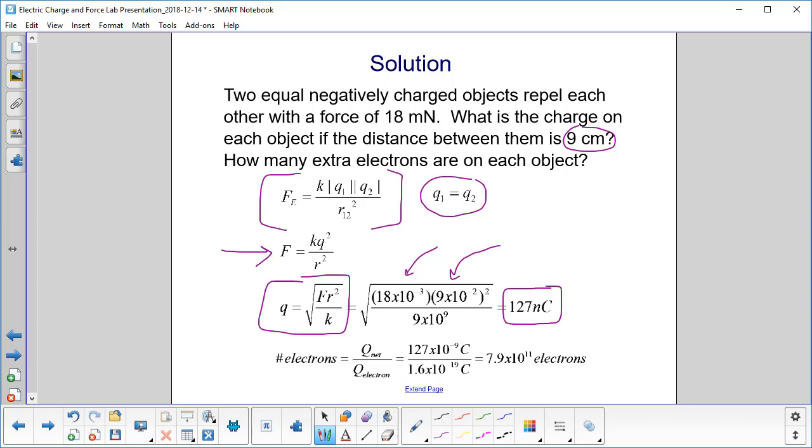Then to find out how many electrons we have, we take our total charge here, Q net, and divide it by the charge on a single electron. That will give us how many electrons are present.